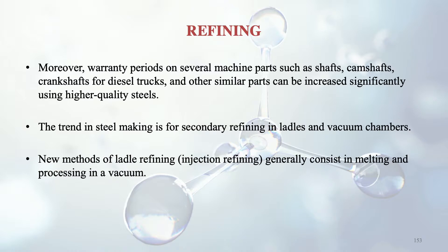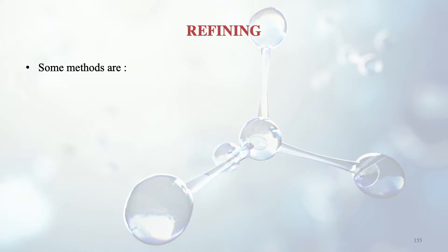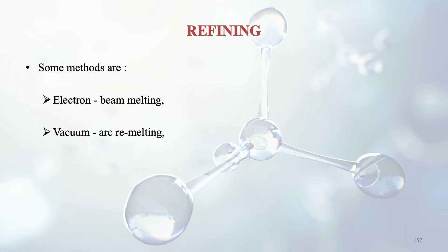The trend in steel making is for secondary refining in ladles and vacuum chambers. New methods of ladle refining and injection refining generally consist of melting and processing in a vacuum, which helps to remove various impurities and gases. Several methods of heating and remelting have been introduced, used in controlled atmospheres: electron beam melting, vacuum arc remelting, argon oxygen decarburization, and vacuum arc double electrode remelting.